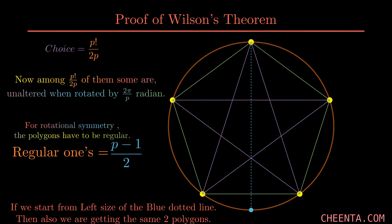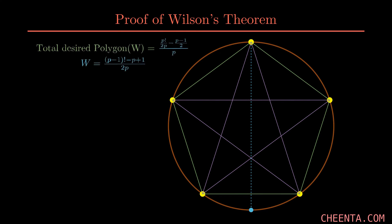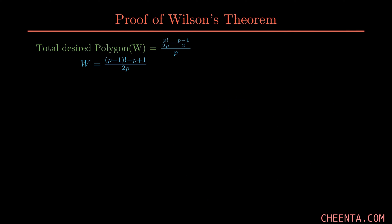So now our final answer, that is how many of the desired polygons W are there, is something like this. Why dividing by p? Because, you know, and we get our desired result.